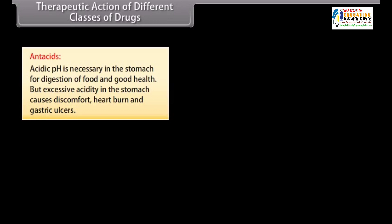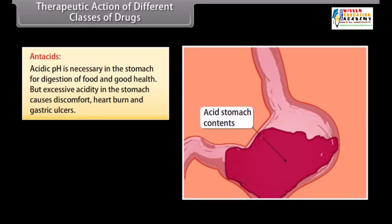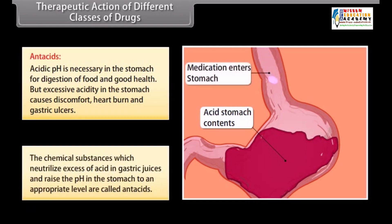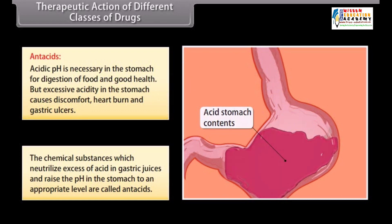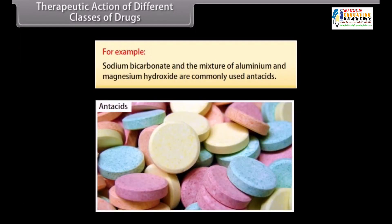Now we'll discuss the therapeutic action of a few important classes of drugs. Antacids: acidic pH is necessary in the stomach for digestion of food and good health, but excessive acidity in the stomach causes discomfort, heartburn, and gastric ulcers. The chemical substances which neutralize excess acid in gastric juices and raise the pH in the stomach to an appropriate level are called antacids. For example, sodium bicarbonate and the mixture of aluminium and magnesium hydroxide are commonly used antacids.